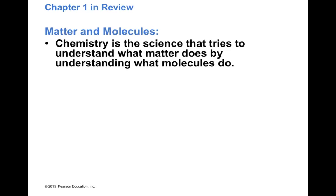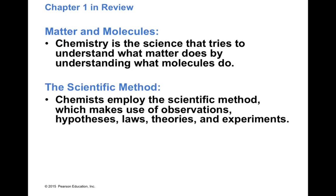So, a short review for this chapter. We talked about matter and molecules and defined chemistry as the science that tries to understand what matter does by understanding what molecules do. We also talked about the scientific method, a tool you've been able to use and also is an important tool for chemists. We defined the different components: observation, hypothesis, laws, theories, and experiments. And finally, we mentioned an example of a scientific law, the law of conservation of mass, and a scientific theory, the atomic theory. So, this will be all for chapter number one.